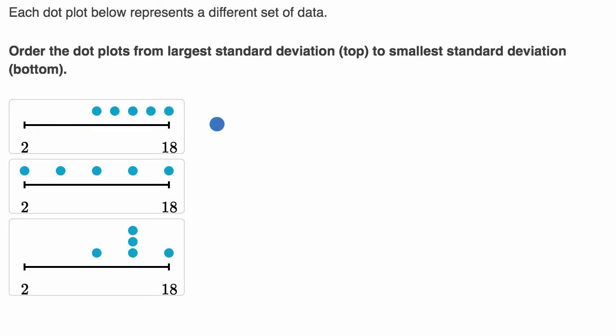So this is interesting because these all have different means. Just eyeballing it, the mean for this first one is right around here. The mean for the second one is right around here at around 10. And the mean for the third one, it looks like the same mean as this top one. And so pause this video. How would you order them?